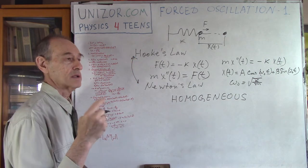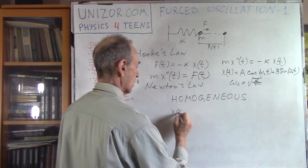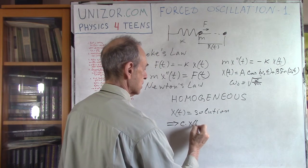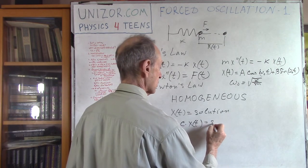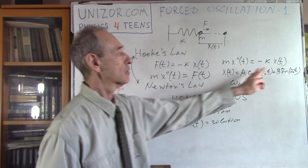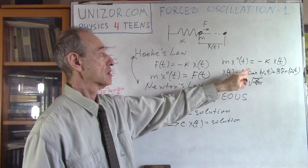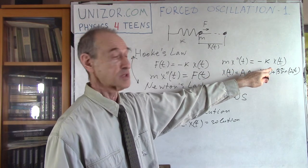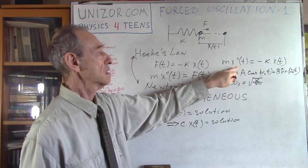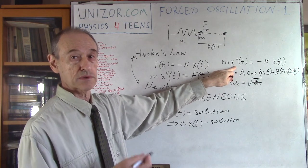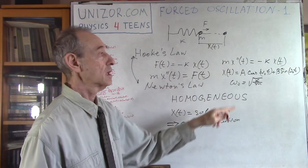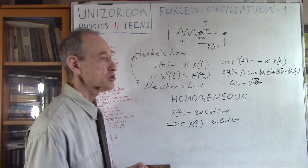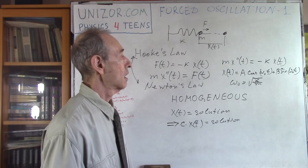This is a homogeneous equation, meaning if X(t) is a solution, then C·X(t) — where C is any constant — is also a solution. If you put C·X(t) into the equation instead of X(t), the constant C multiplies all derivatives as well, and C cancels out, so you still have an identity. It's a homogeneous linear differential equation, and the general solution depends on two variables A and B.